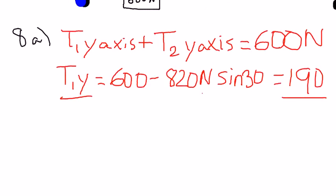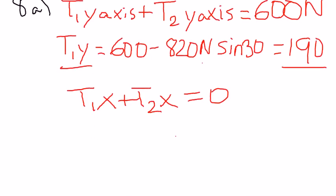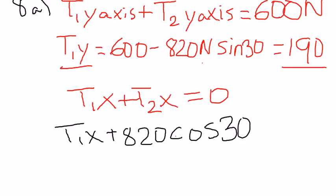Now tension 1 of the x-axis plus tension 2 of the x-axis is going to equal 0 because it's not moving or swinging. And so tension 1 of the x-axis plus 820 cos 30 is going to equal 0.